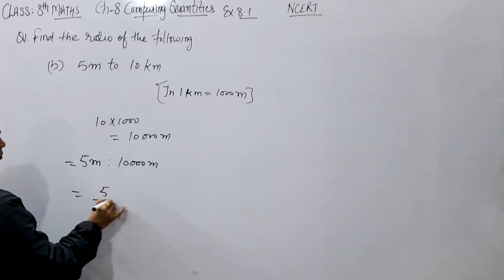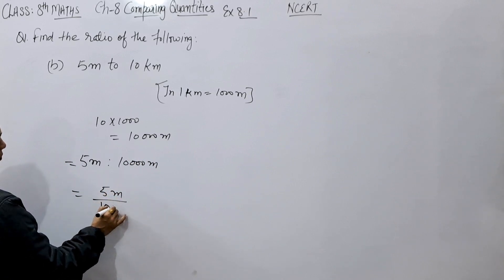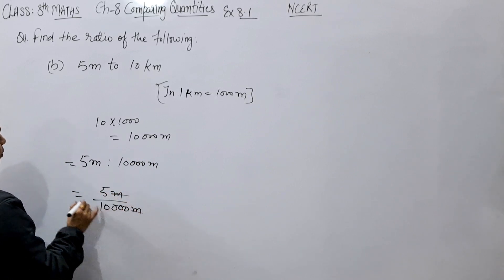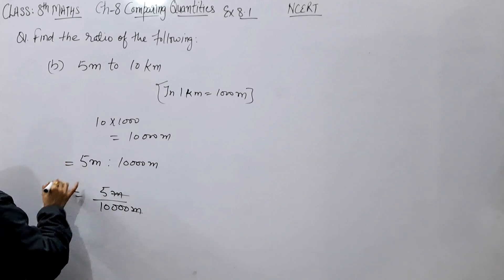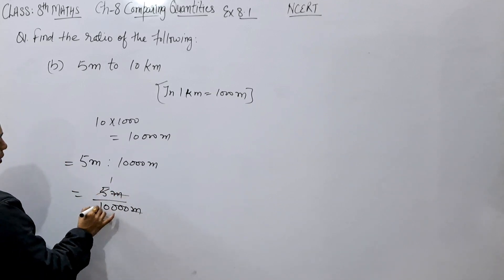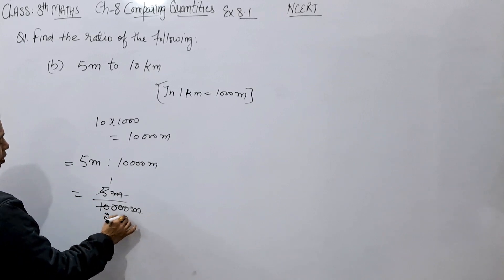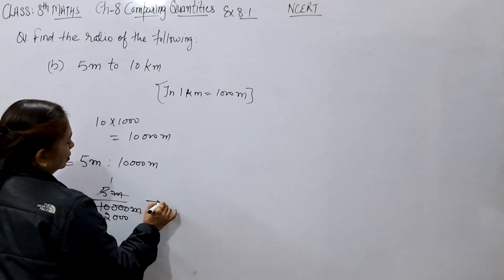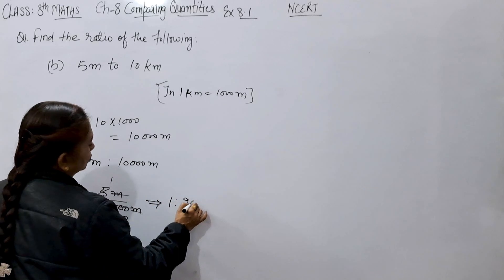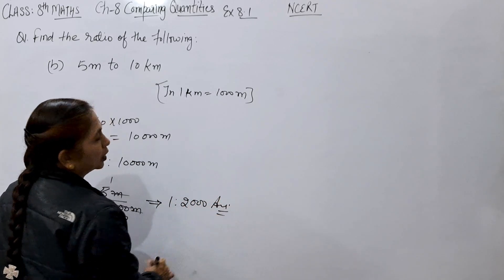We can write this as a fraction — 5 over 10,000. The meter units cancel out. 5 divided by 10,000 — simplifying, 5 goes into 10,000 with three zeros remaining. So our answer is 1 ratio 2,000.